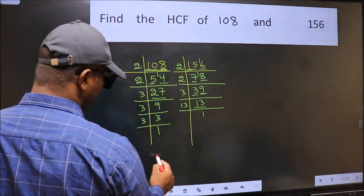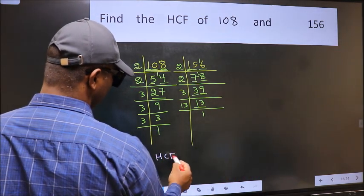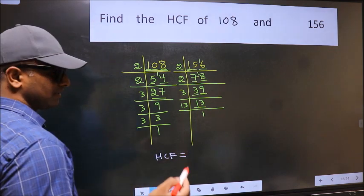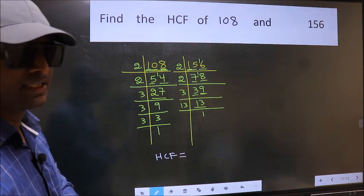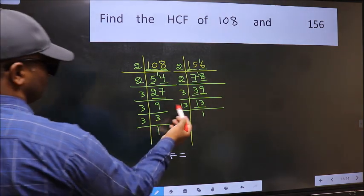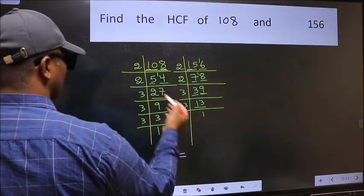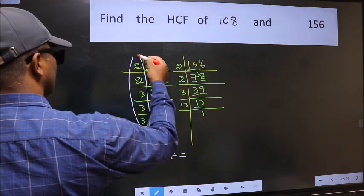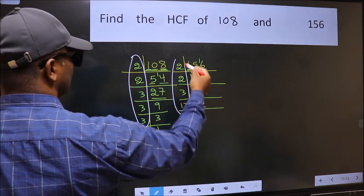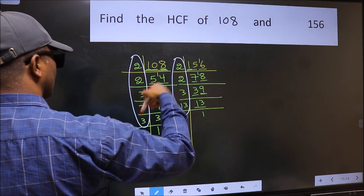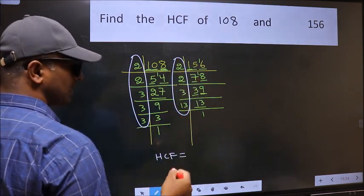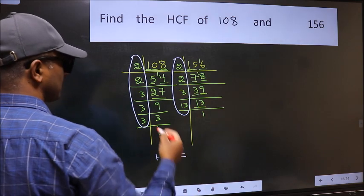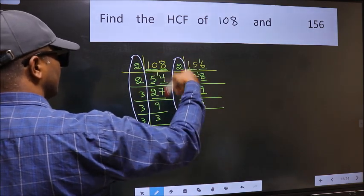Therefore, our HCF is—HCF is the product of the numbers which should be present in these 2 places. That is here and also here. Here and here. So now let us find the numbers which should be present here and here.